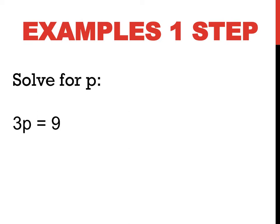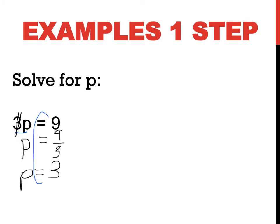This time I have 3P equaling 9. What operation is going on between the 3 and the P? Multiplication. What's the opposite of multiplying? Dividing. If I want to get rid of that multiply by 3, I can only do it by the opposite operation — dividing by 3. If I divide this side by 3, I have to divide my other side by 3. 9 divided by 3 is 3. Equal signs under equal signs, showing all my working.